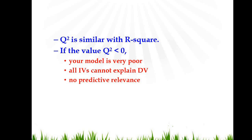Q-square is similar with R-square. If the value of Q-square is less than 0, that means your model is very poor and all independent variables cannot explain the dependent variable. In other words, we can say there is no predictive relevance.